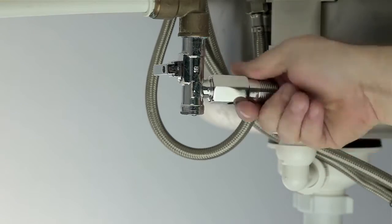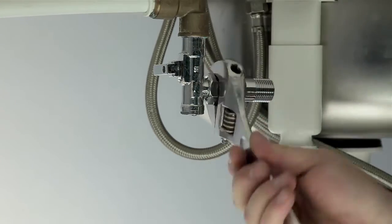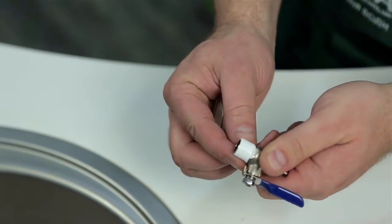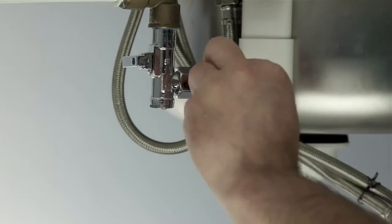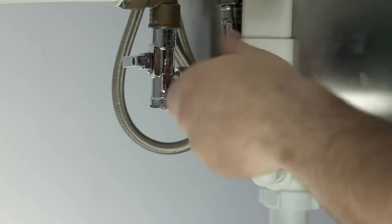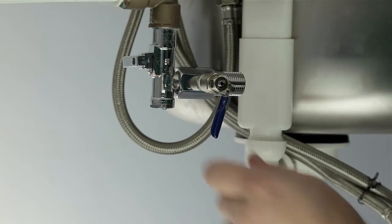Screw the feed valve into the feed water adapter. To help prevent water leaks, use PTFE sealing tape. Connection size is selected to fit most common half-inch pipe. If your pipe is of another size, prepare an appropriate adapter.